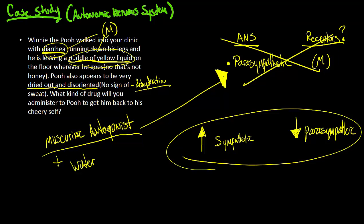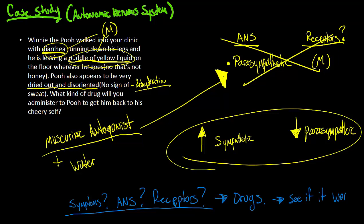So, first of all, you find out what the symptoms are. What are the symptoms? And then, you say, what autonomic nervous system is in play? And then, you find the receptors involved. And then, you decide on the drugs that you'll use. After that, see if it worked. And that's how you do it.